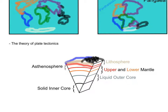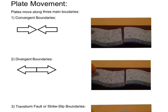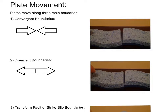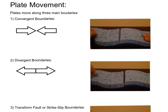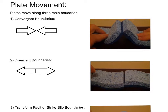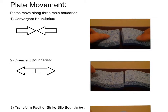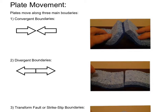Now that we know the plates are moving, let's talk about how they move. Plates move along three main boundaries. Convergent boundaries — as seen in the video I recorded using sponges — are where plates collide or crash into each other. Earthquakes occur and both mountains and volcanoes are formed along convergent boundaries. In fact, the largest mountains in the world, such as the Himalayan and Ural mountains, were formed along convergent plate boundaries.